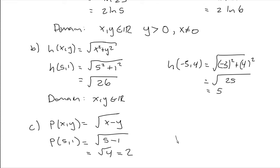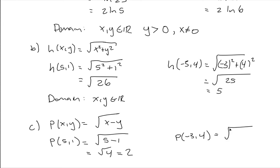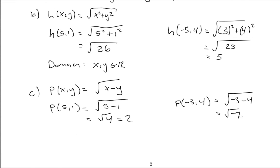Next, we're going to evaluate p at negative 3, 4. We replace all x's by negative 3 and all y's by 4, giving us the square root of negative 3 minus 4, which is the square root of negative 7. That's not defined for real numbers, so this is not possible. The function is not defined at x equals negative 3, y equals 4.